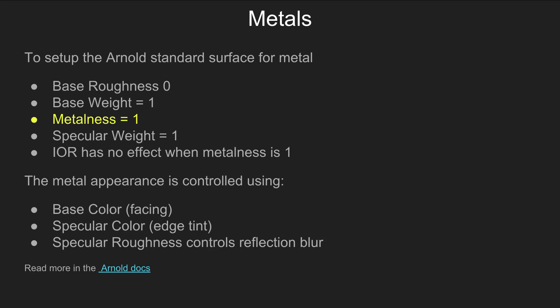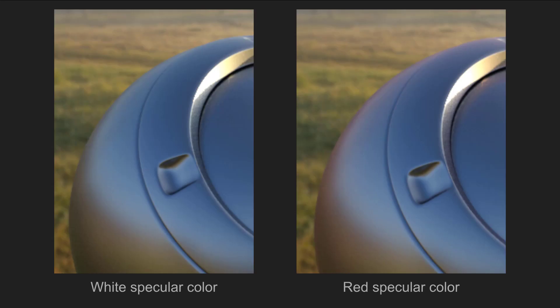So we just control the metal appearance by adjusting base colour, specular colour and specular roughness. Now in real life there is a slight tint to the edges of metals — the facing reflections and the edge reflections are different. It is quite a subtle effect, but you can adjust it in Arnold. The facing reflections are controlled by the base colour. You can leave the edge reflections white, or you can give it a slight tint. I've totally amped it for this example — this is not really realistic — but you can see the difference between the white specular reflections on one side and the red specular colour on the other side. Normally the effect is quite subtle.